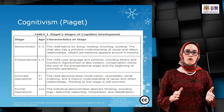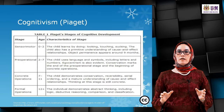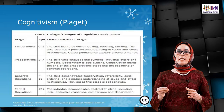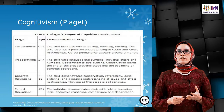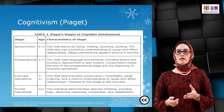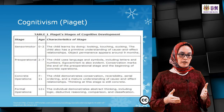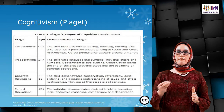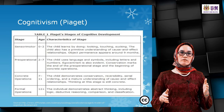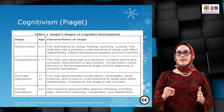From two to seven years old is the pre-operational stage, where the child uses language and symbols including letters and numbers. Egocentrism is evident, and conservation marks the end of this stage and the beginning of concrete operations. You can see that from two years old up to around Year One, children start to recognize letters like A, B, C.